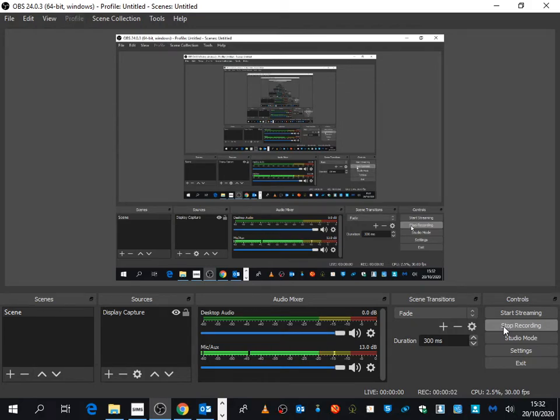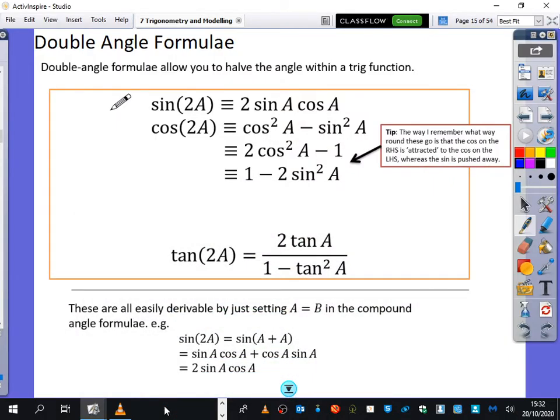Okay, so we're going to have a look at the double angle formulae here. The double angle formulae are just based on the addition formulae. They look different, but they are really just the same as the addition formulae. What the double angle formulae allow you to do is to halve the angle within a trig function.